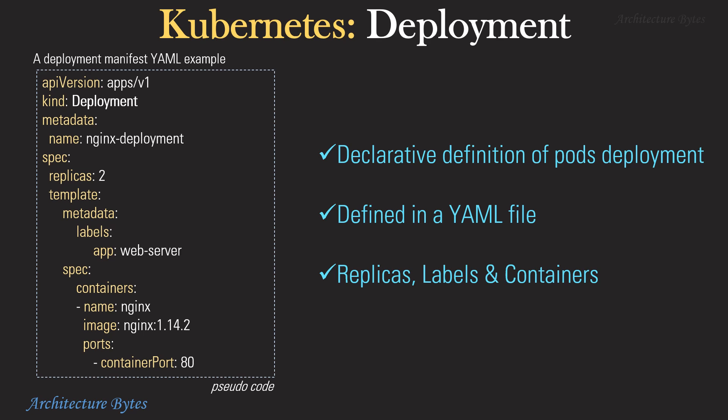A Kubernetes deployment is a declarative definition of how pods should be deployed. It is defined as a YAML file. It contains information about how many replicas of a pod should exist at a time, the labels for a pod, and what containers it should run.